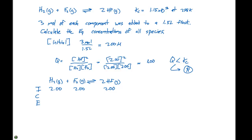For every x moles of H₂ that decreases, there's going to be x moles of F₂ that decreases, and two times as many moles that increase for HF. So we put negative x for the change in hydrogen and fluorine, and plus 2x for HF. At equilibrium, the concentrations are 2.00 minus x for both reactants, and 2.00 plus 2x for the product.